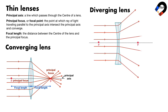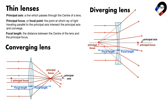In a diverging lens, parallel rays of light are made to spread out from a point. This point is the principal focus — it is the point from which the rays appear to diverge. The distance from the center of the lens to the principal focus is called the focal length. The line that passes through the center of a lens is the principal axis.